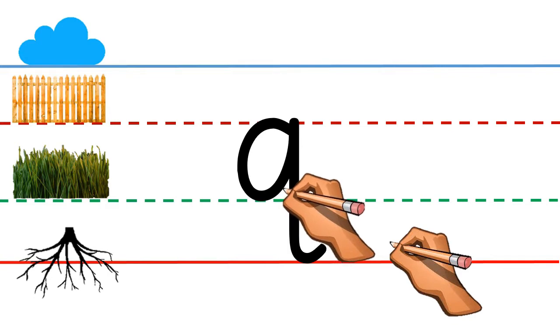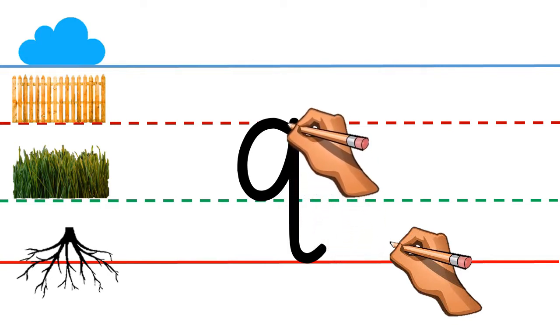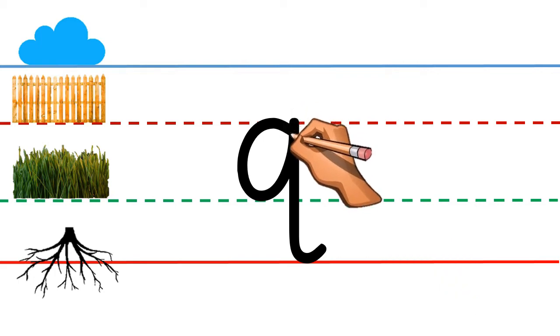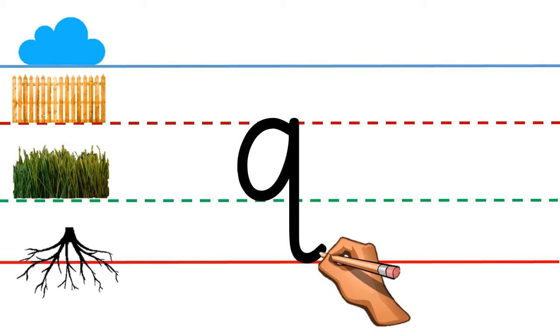Now go up and touch the fence line again. Come down straight and touch the root line. Make a loop.